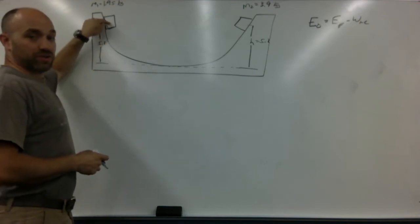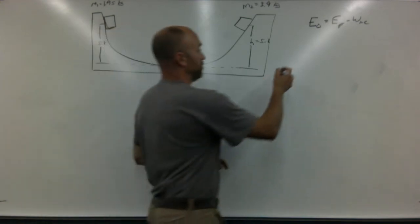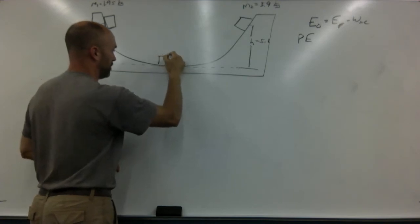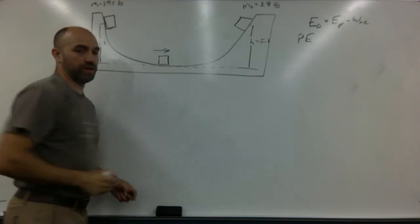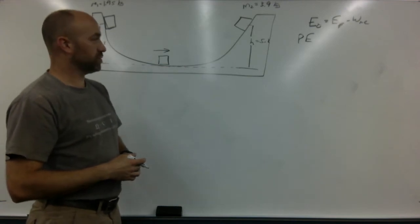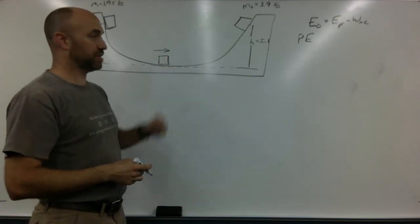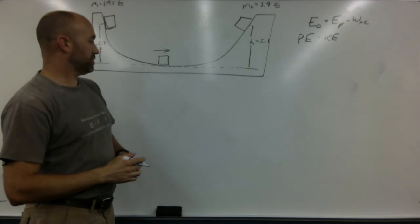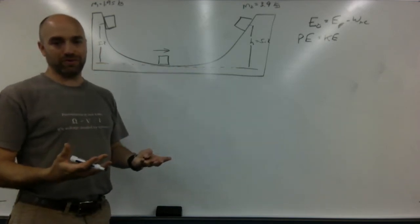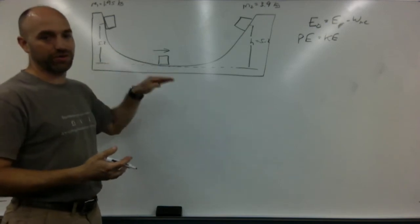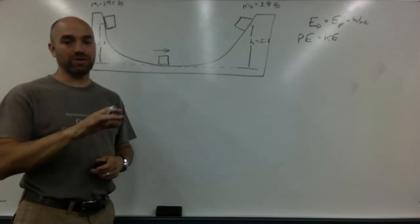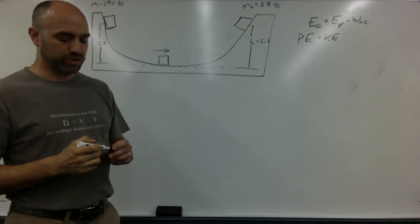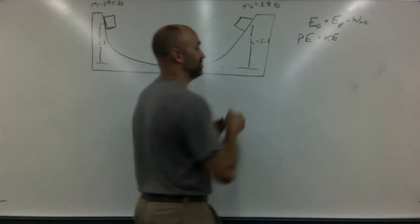So what kind of energy does it have at the start? Potential energy. And then it slides down the incline and ends up at the bottom moving horizontally — kinetic energy. I drew a dashed line for the ground. The best place to put the ground is always at the lowest point of your object. And how much friction? Zero — so that work term goes away.